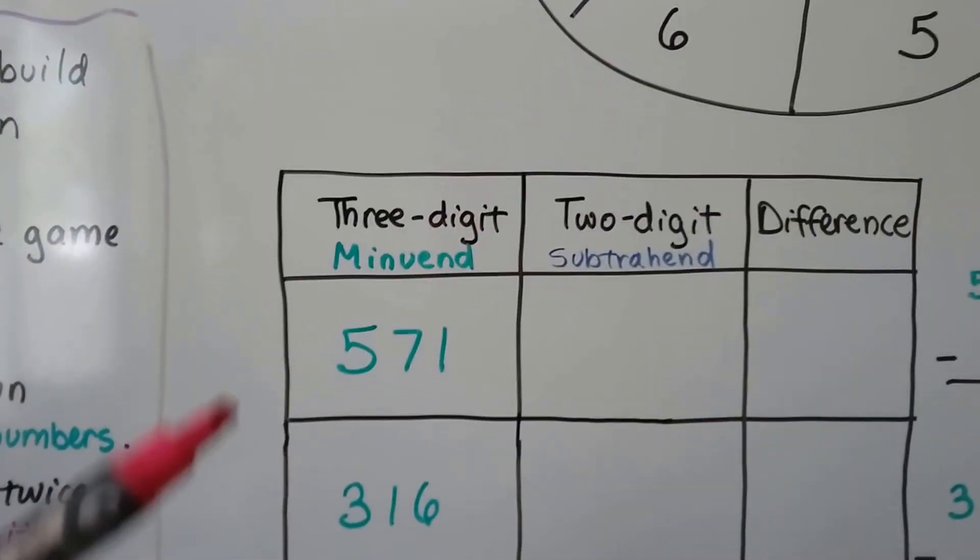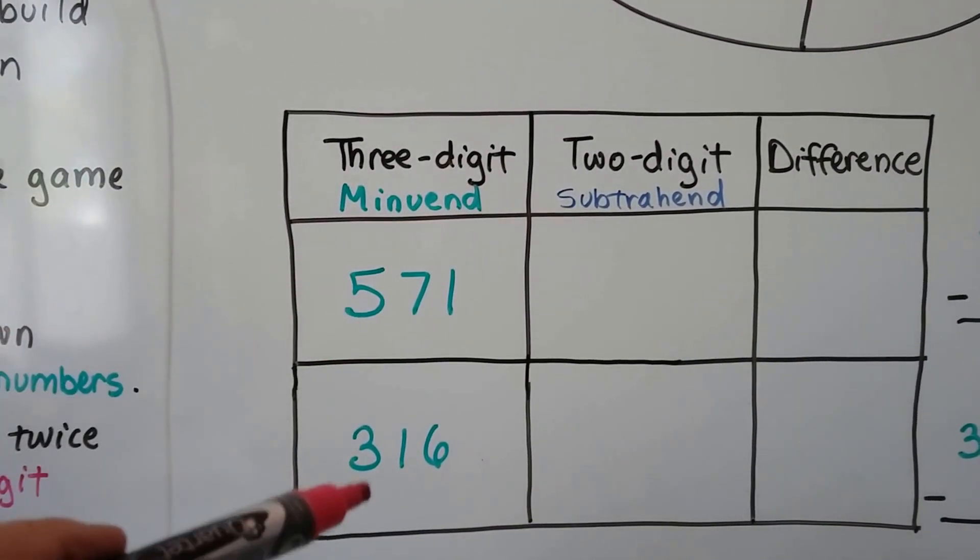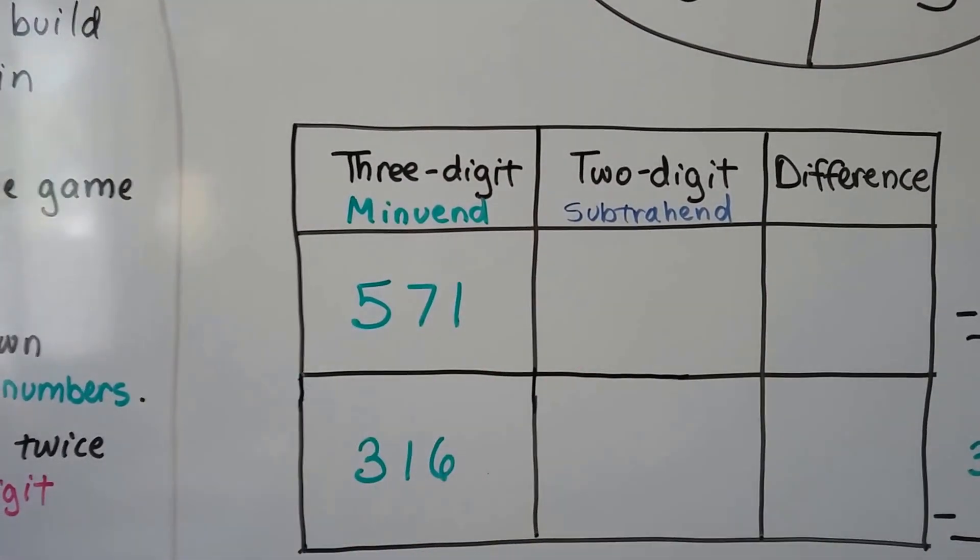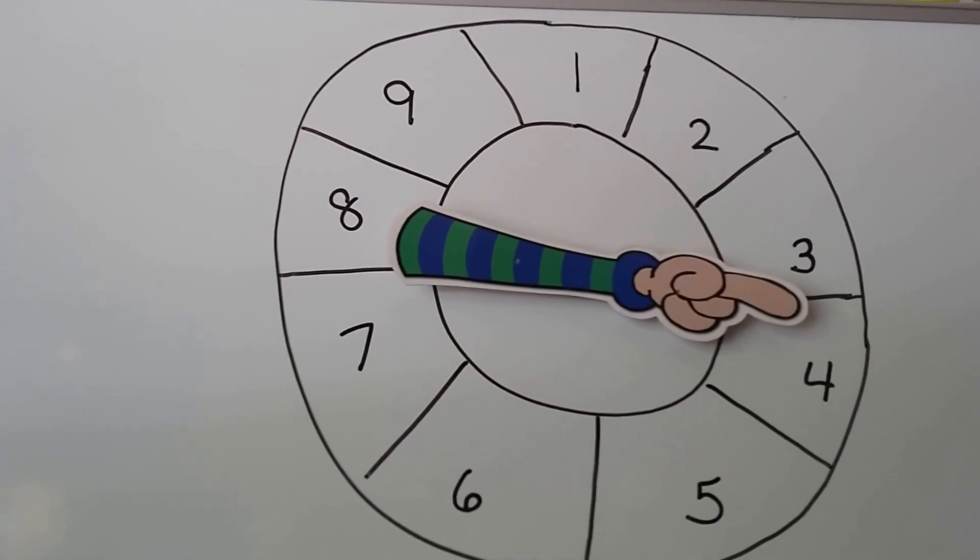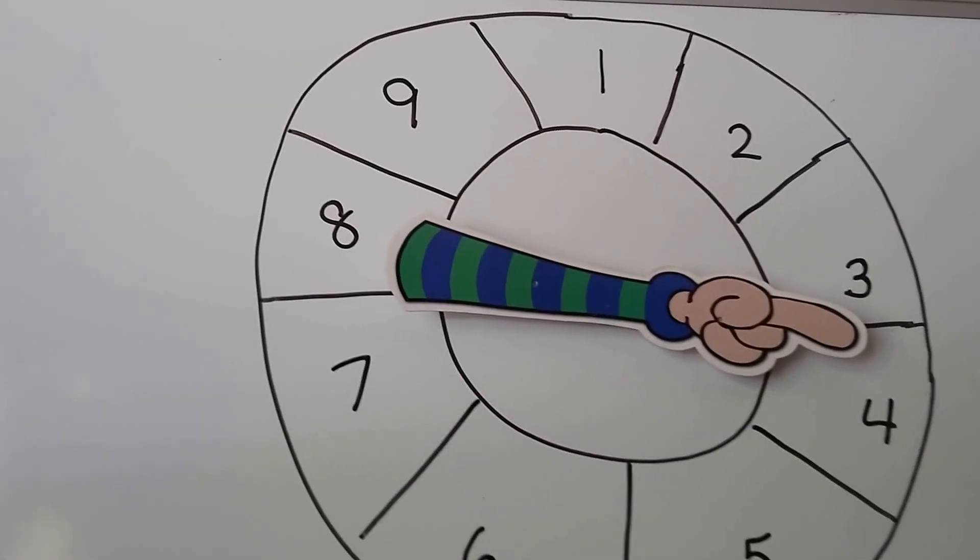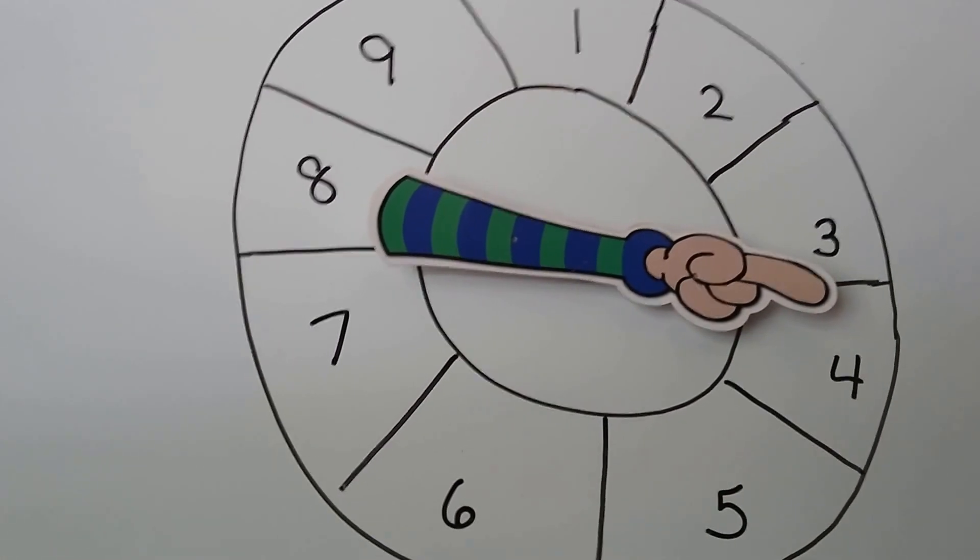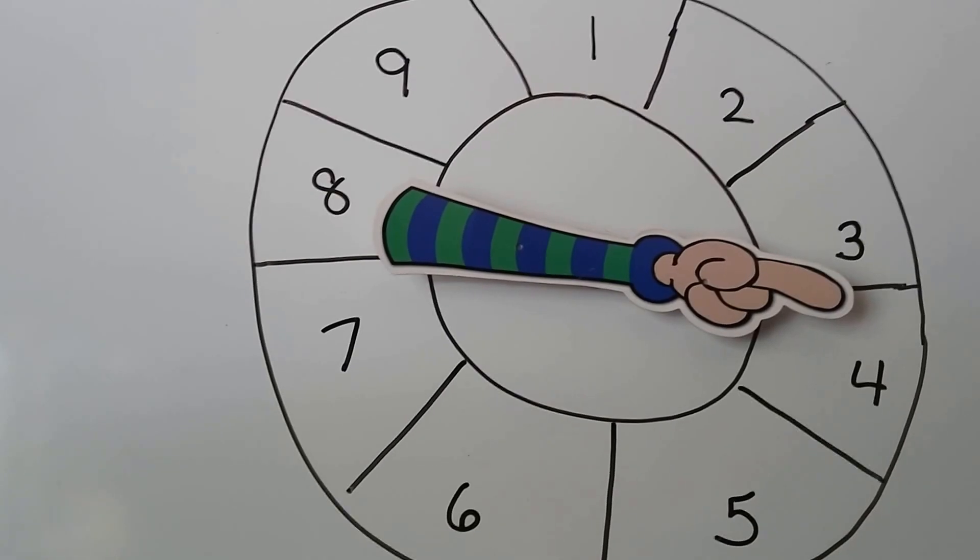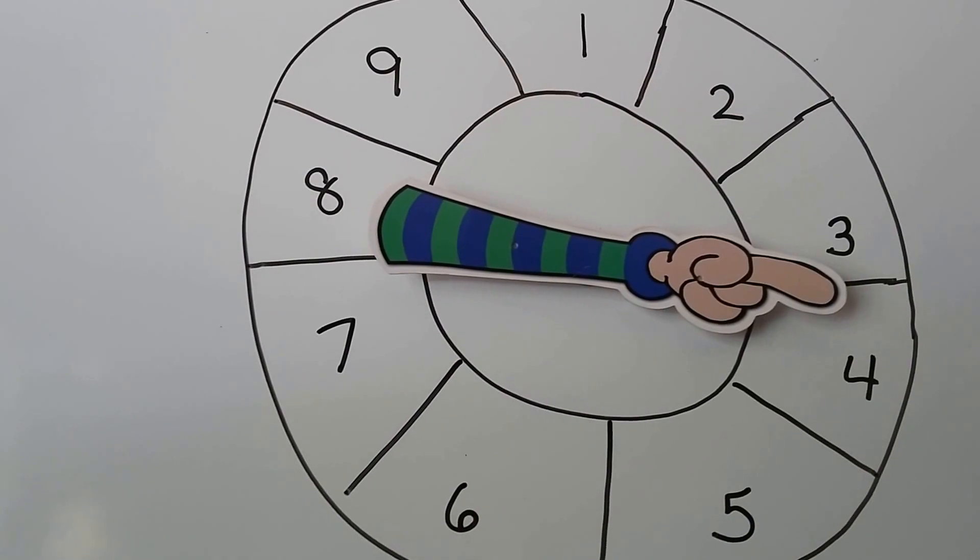So I made a little chart here, and here's the 3-digit minuend that I came up with. I'm going to spin the spinner to come up with some 2-digit subtrahends, and then we're going to subtract and find the difference. So I've got my spinner here, and I've got my numbers 1 through 9. You could even have a 0 if you want to, and you could use number cubes, dice, and you can even use playing cards. Use playing cards that are 9 or less. Don't use the big numbered cards.